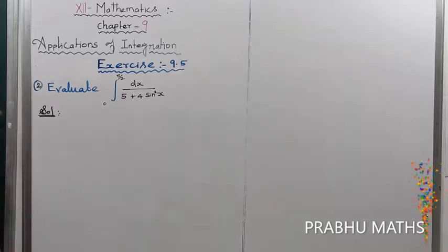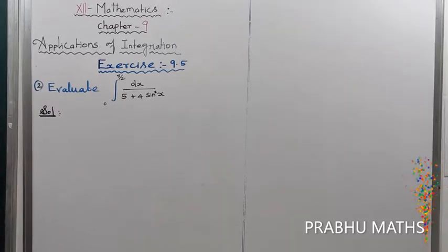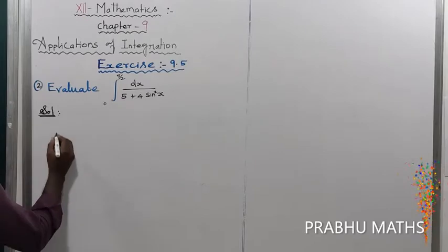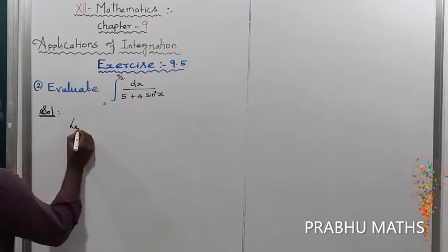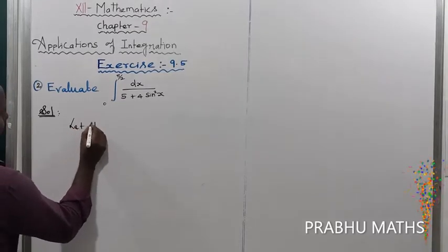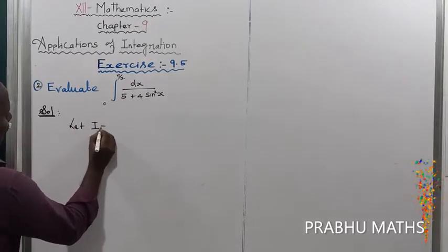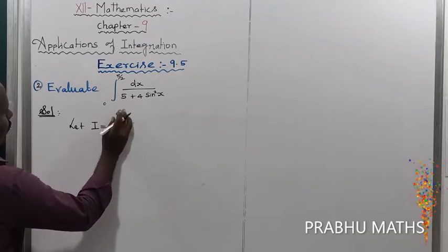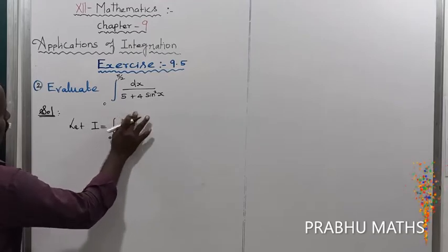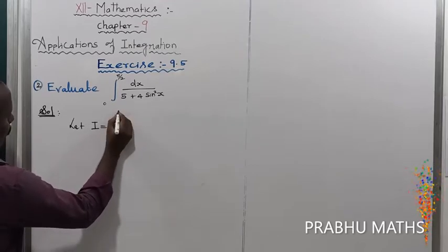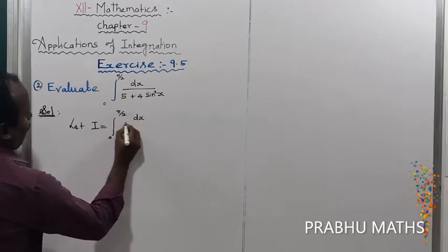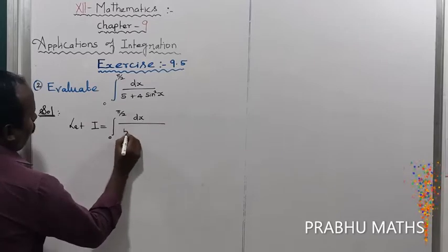Evaluate the integral from 0 to pi/2 of dx divided by 5 plus 4 sin squared x. So first, the given integral is equal to the integral from 0 to pi/2 of dx divided by 5 plus 4 sin squared x.